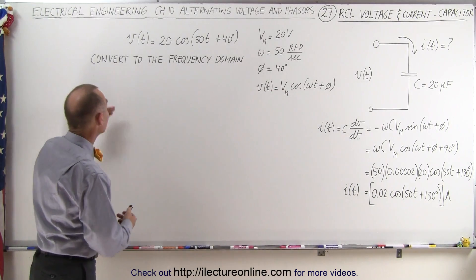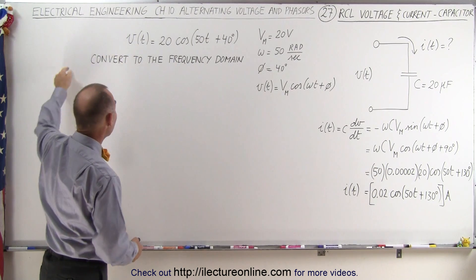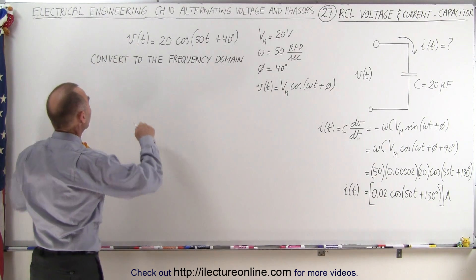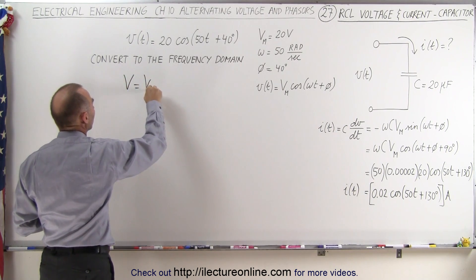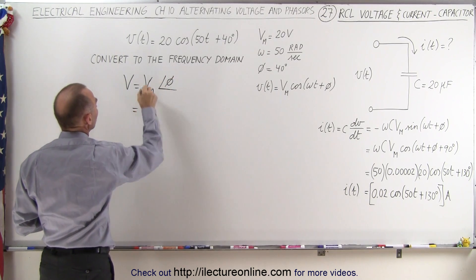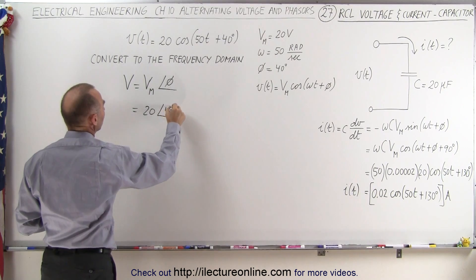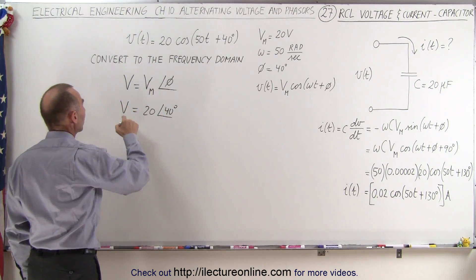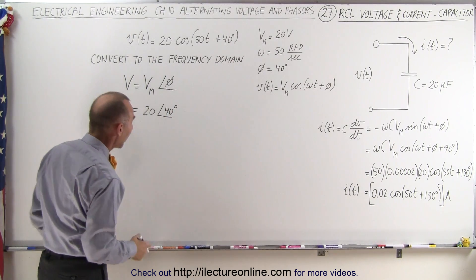Or we can do it like this: take the equation for the voltage with respect to time and convert it to the frequency domain — that's rather simple. We can simply say that voltage is equal to the maximum voltage and express the phase angle. So in this case, the maximum voltage would be 20 volts and the phase angle would be 40 degrees.